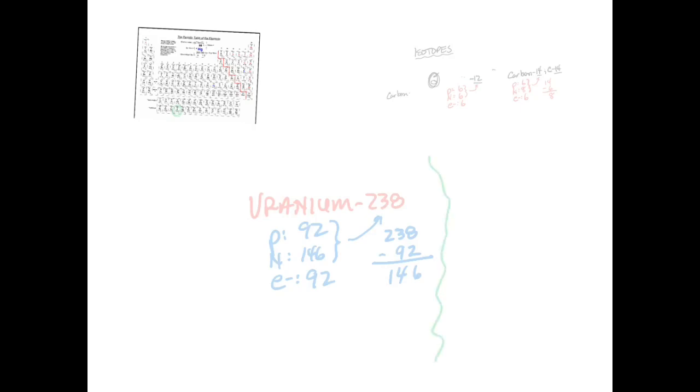All right, now U-235, still being uranium, has 92 protons and of course will have 92 electrons. But in this case with the neutrons, remember that mass right there has to be 235. We're going to have 235 for the mass. Take away the protons, and that's going to be 143 neutrons.